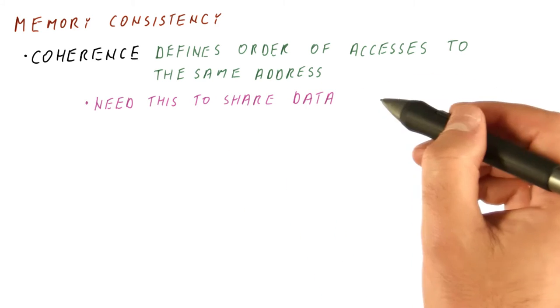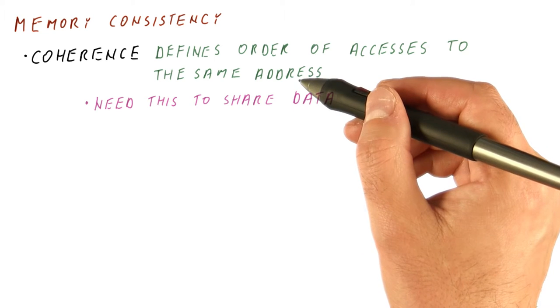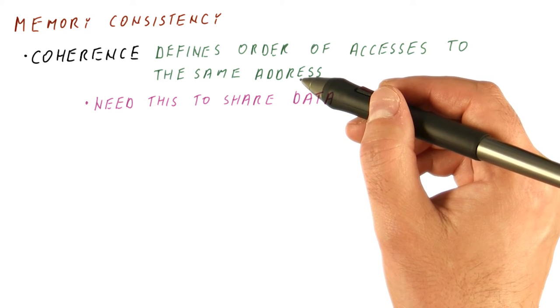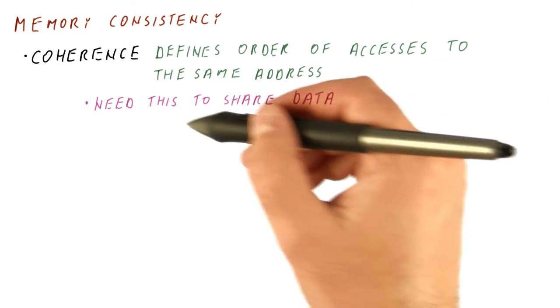Coherence is needed in order to share data. Without coherence, a thread is allowed to modify a memory location while another thread is allowed to read forever the old value of that location, in which case we cannot really write shared memory programs that work.